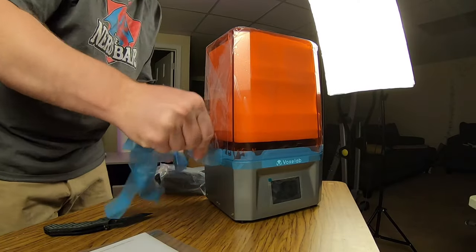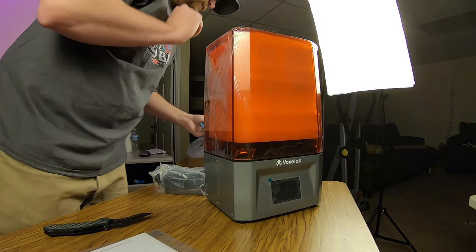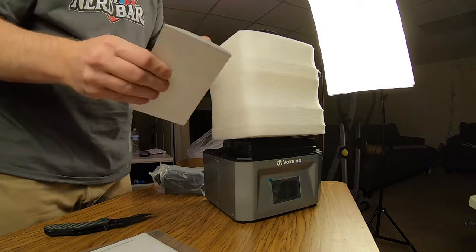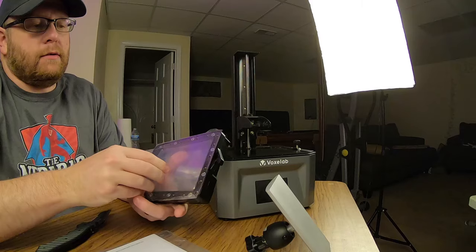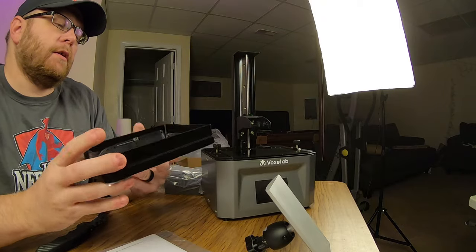Once I was able to get the blue tape off of the machine that held the lid to the machine, underneath the lid I found the build plate and the resin vat, also well packaged in some protective foam.